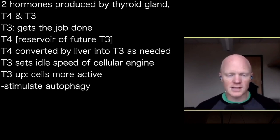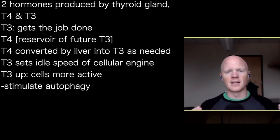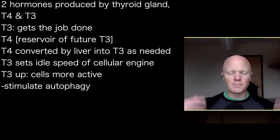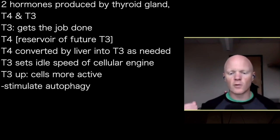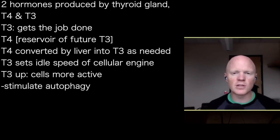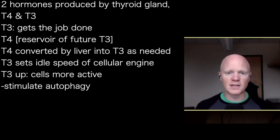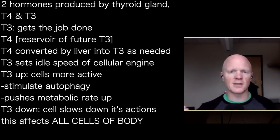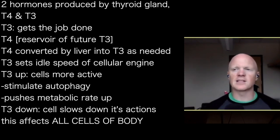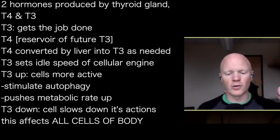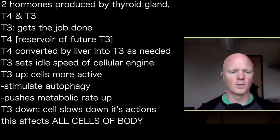What thyroid hormone does is also very misunderstood. It essentially sets the throttle of the cellular engine — it sets the idle, or how busy the cell is. When thyroid hormone is up, cells are simply more active, going through the cell cycle more rapidly. This includes things like autophagy. Thyroid hormone pushes cells to be busier, which is why metabolic rate goes up — and that's why so many people are fascinated by thyroid hormone.